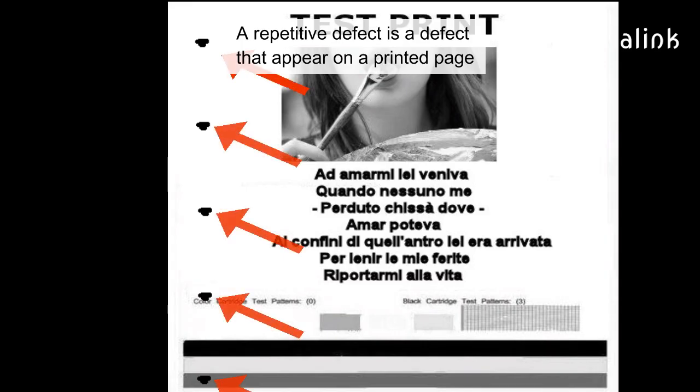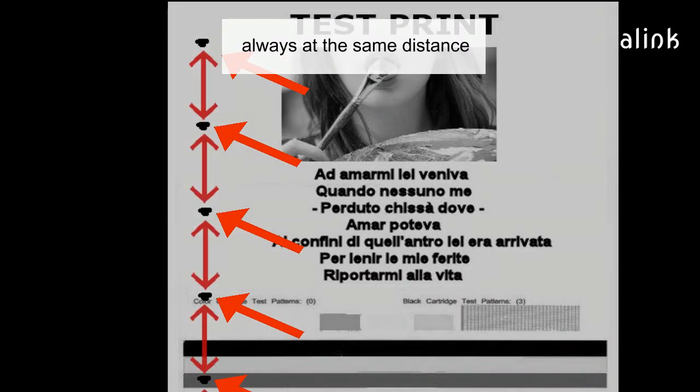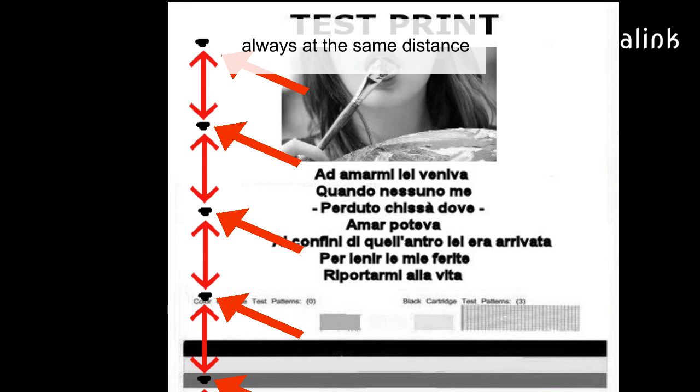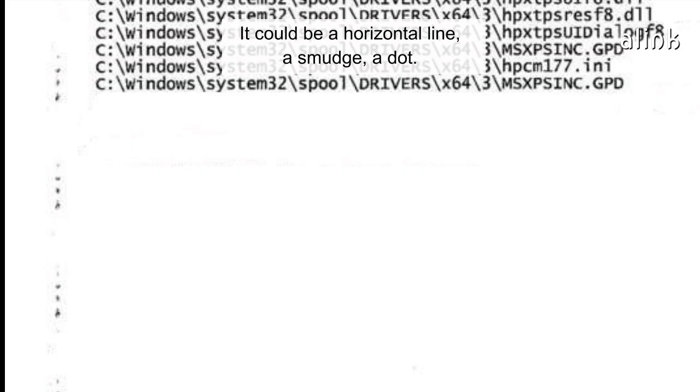A repetitive defect is a defect that appears on a printed page, always at the same distance. It could be a horizontal line, a smudge, or a dot.